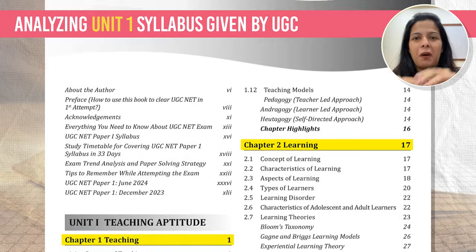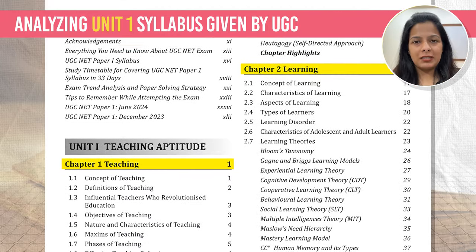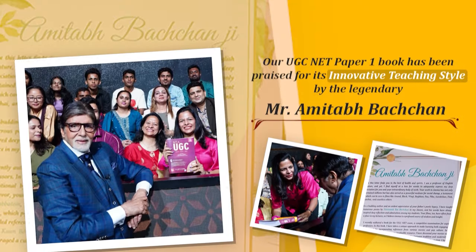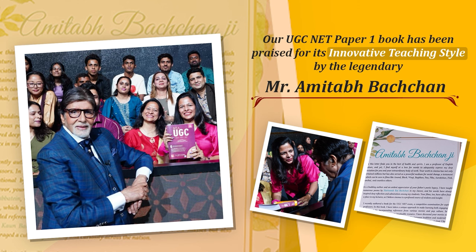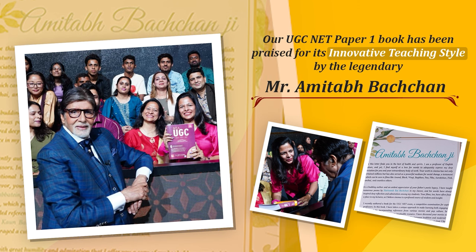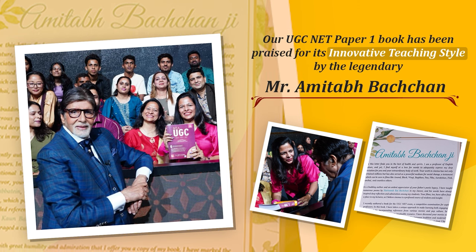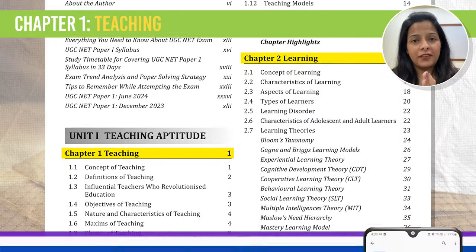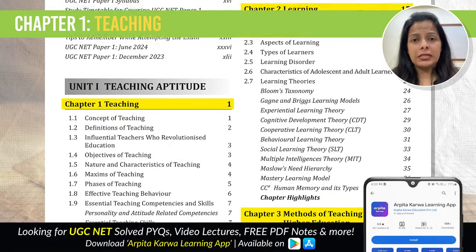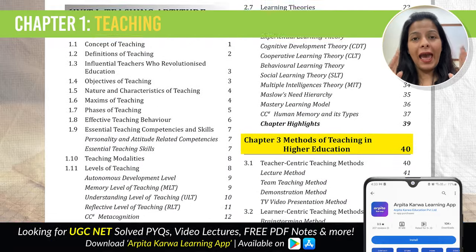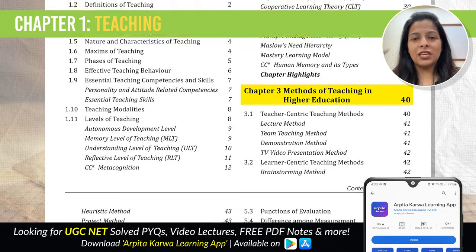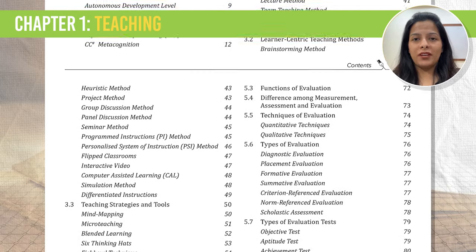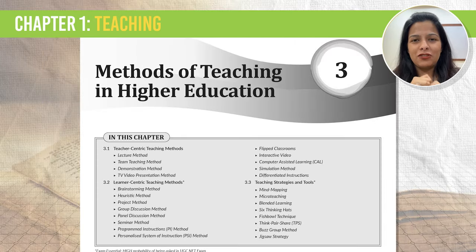You will find this detailed breakdown of the syllabus in our Amazon bestseller, the UGC Net Paper 1 book. I am going to take you through all 5 chapters one by one so that you can see the detailed list you have to cover. While I am taking you through these chapters, I am also going to specifically talk about the most scoring topics that you have to study in each of these chapters.